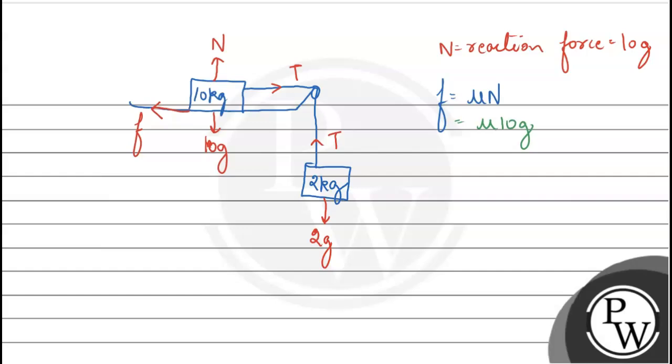Now, the 2 kg block will move downward, so acceleration is downward, and the 10 kg trolley's acceleration is forward.